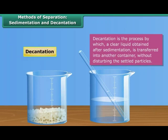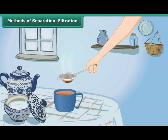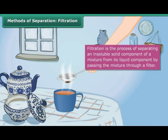Similarly, there are other separation methods too. Let us discover them in this module. After preparing tea, this tea stall owner pours the mixture into the tea strainer. The tea passes through the holes of the tea strainer, leaving behind the tea leaves in it. This process of separation is known as filtration.